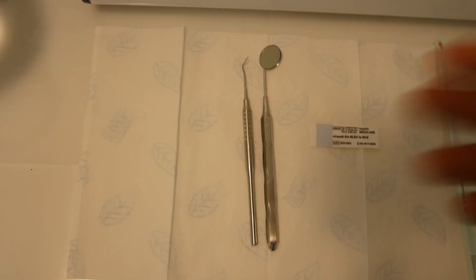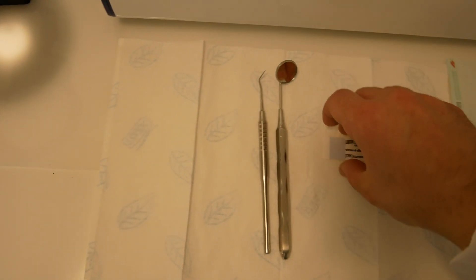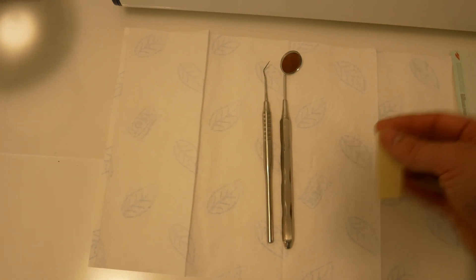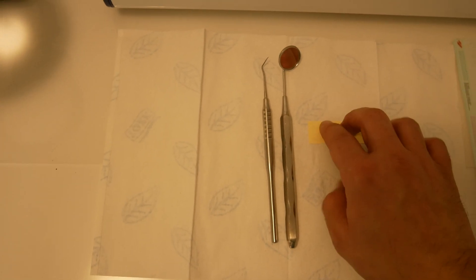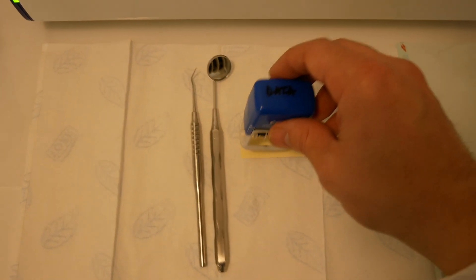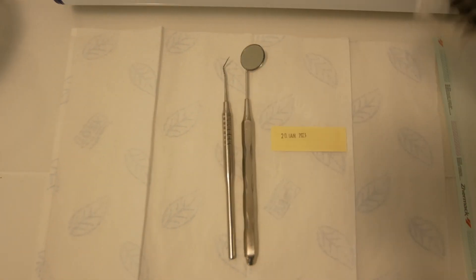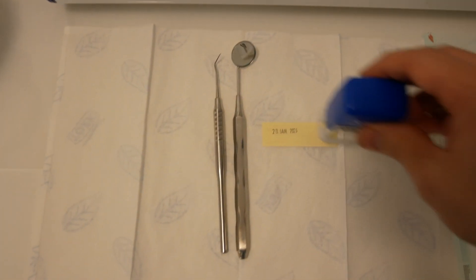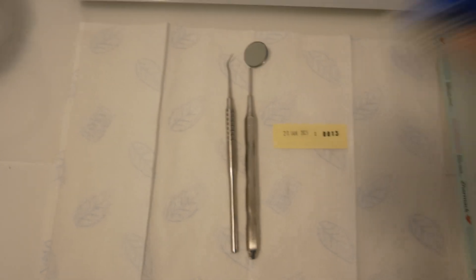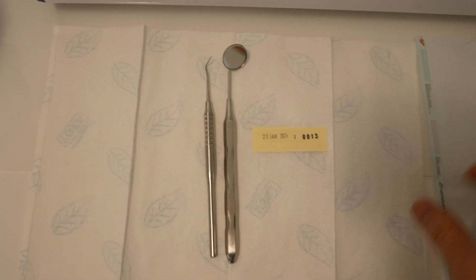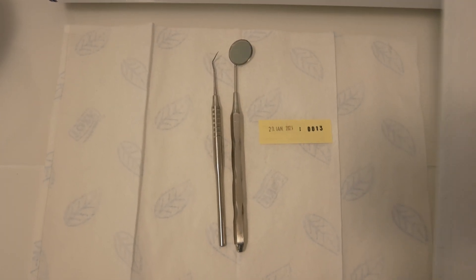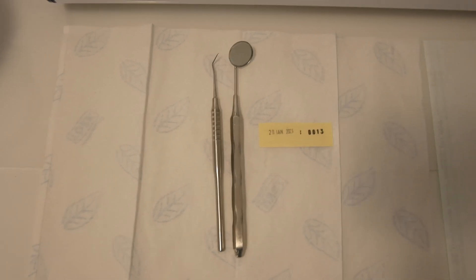Also, for traceability purposes, I'm stamping the date and also the packaging lot on each of the class 5 integrated strips and also on the package itself.